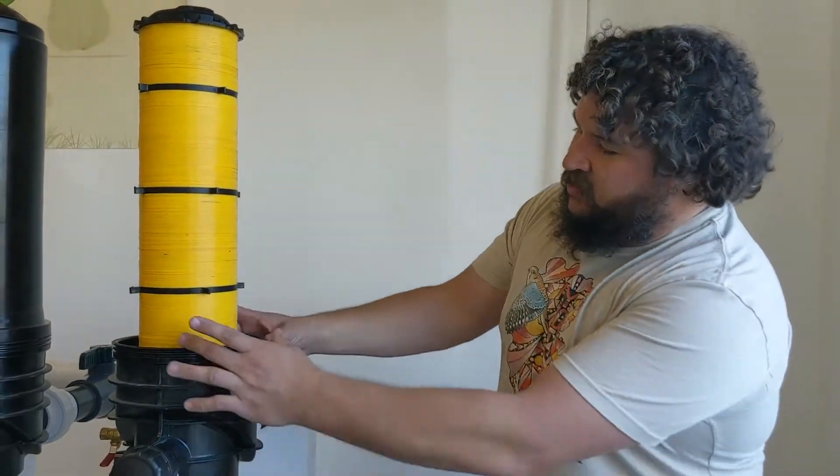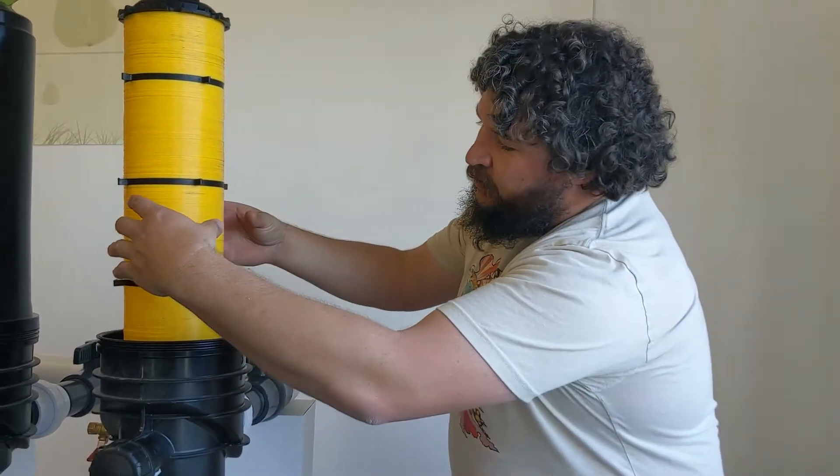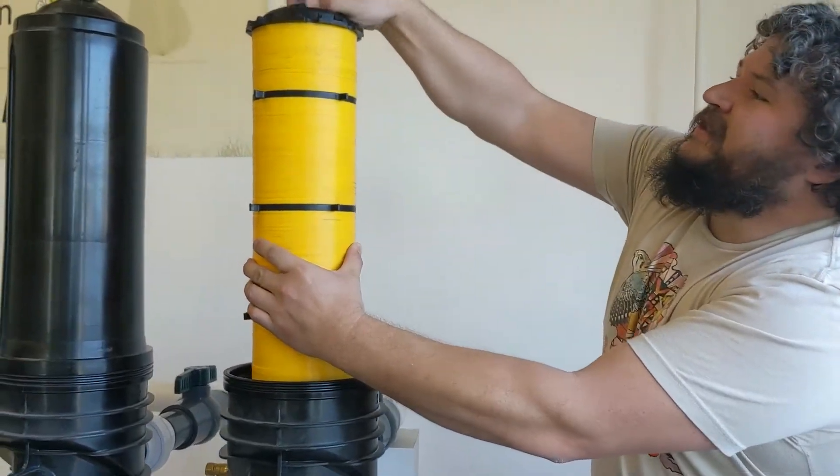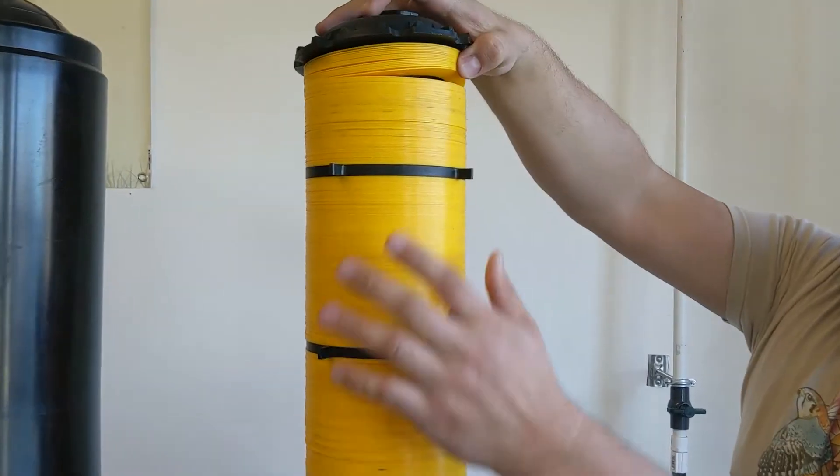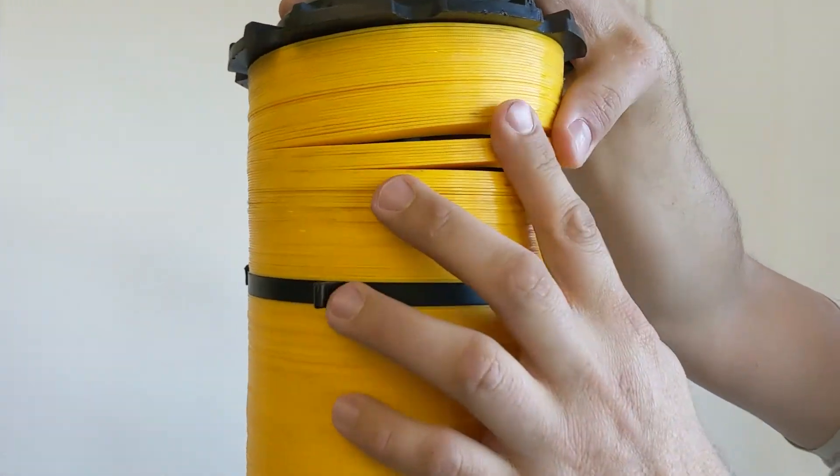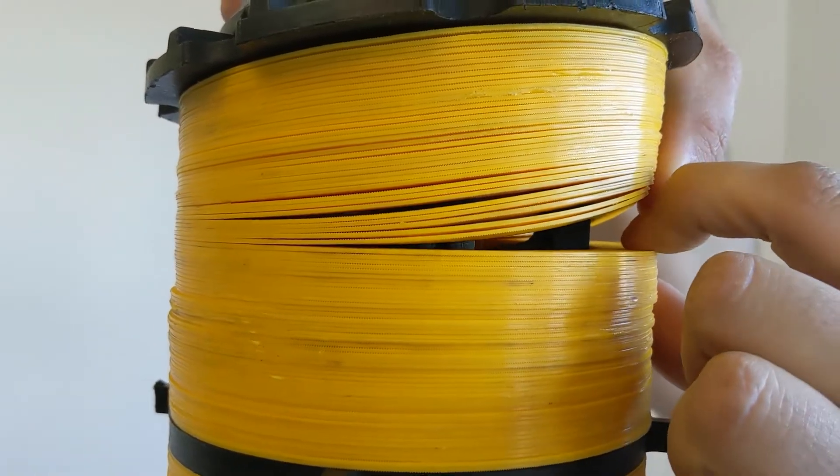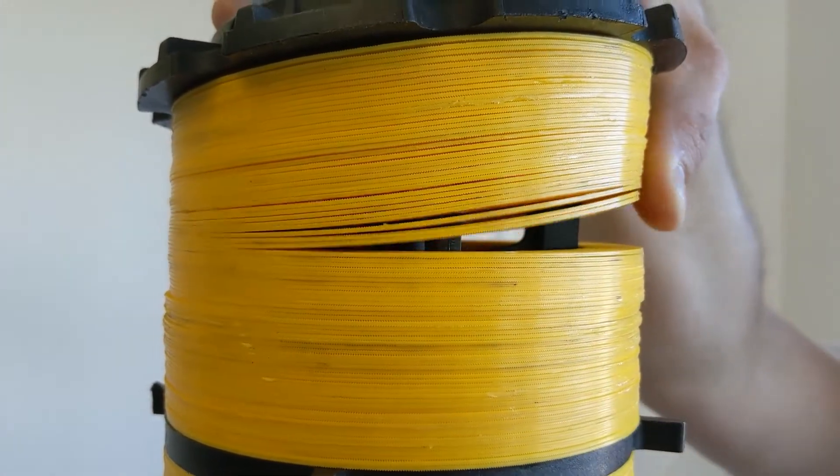Water will come in here, fill up this chamber on the outside, and then the pressure of the water will push its way through these disks. Open this up. You can see that these are just stacked on top of each other. And if you stick your finger there and feel, it's kind of a waffled imprint on the insides of the disk.